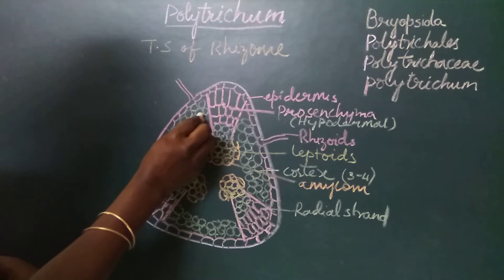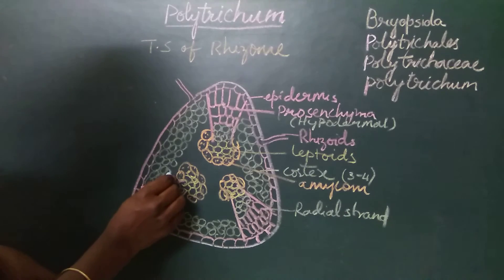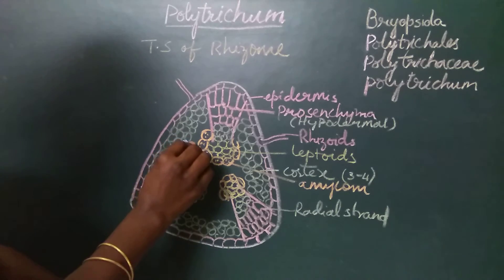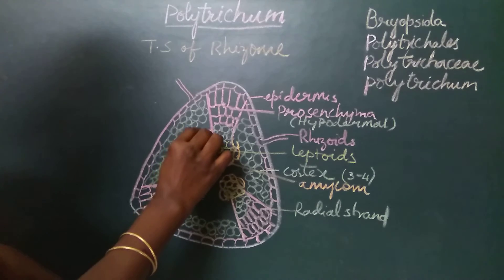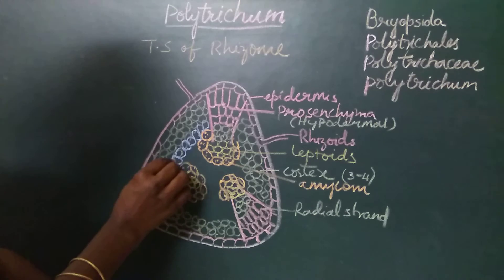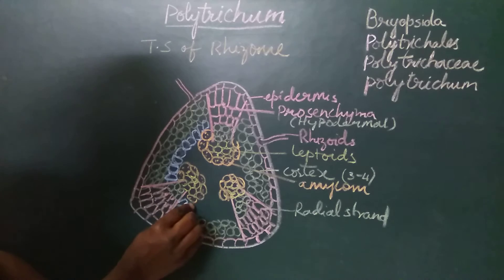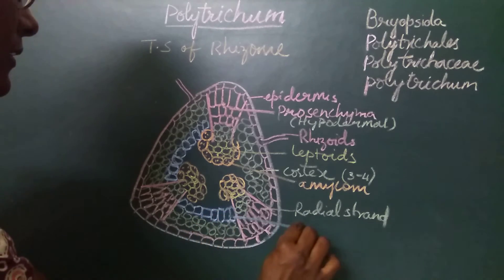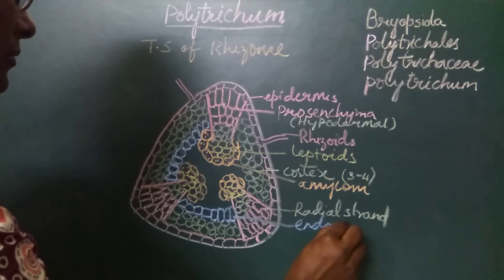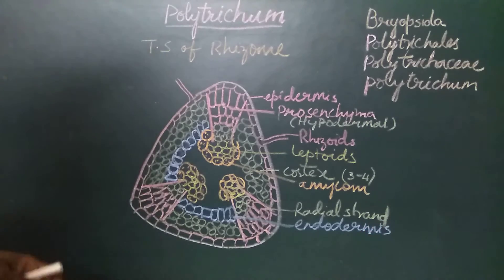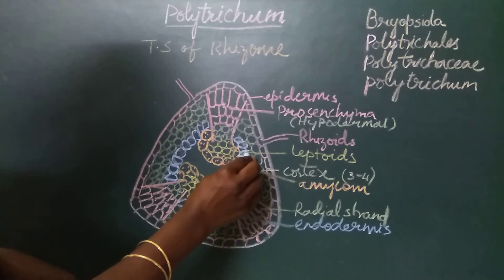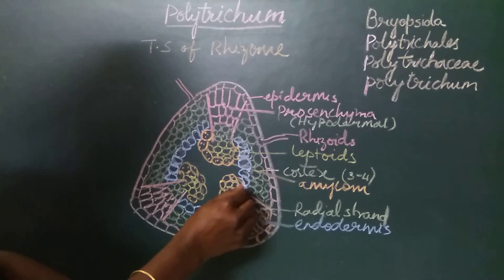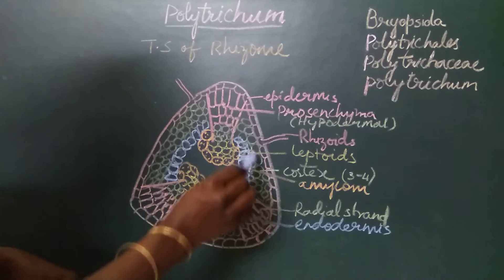Just below the cortical cells we find a layer of endodermal cells which are radially elongated and have thick walls. The endodermis is also not continuous but is interrupted by the radial strands, meaning we find three patches or fragments of endodermis.